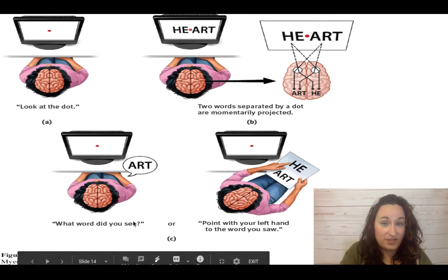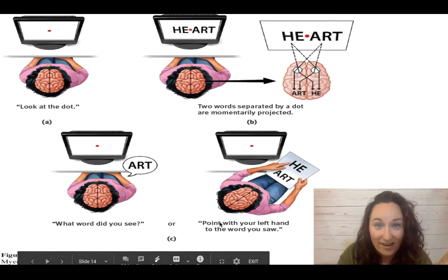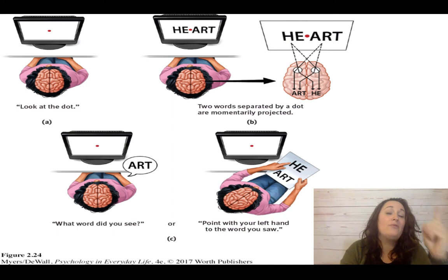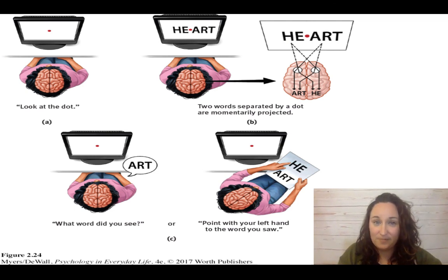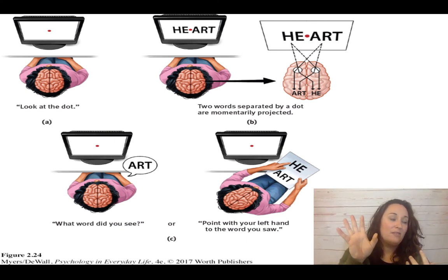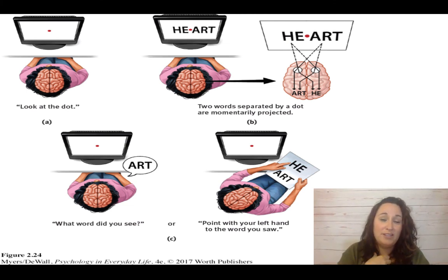When asked what word they saw, the person responded with 'ART' because that went to the left hemisphere. But if asked to point with the left hand to the word they saw — and the left hand is controlled by the right hemisphere — the person would point to 'HE.' This shows that the right hemisphere receives and manages information, but in a split-brain situation it cannot speak. The only reason we can speak information is because our right hemisphere can communicate to our left.